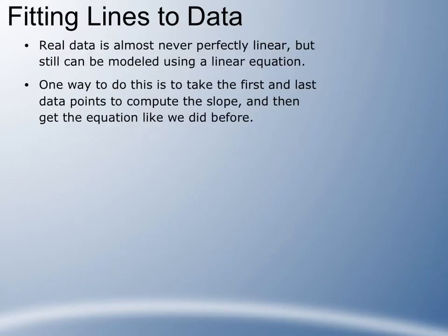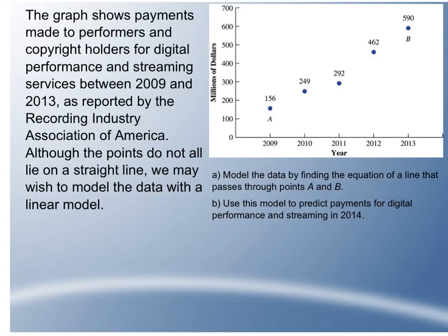The next step in this process is called fitting lines to data, to real data. Real data, typically not perfectly linear, but it can still be modeled using a linear equation. One way we do this is to take the first and the last data points, find the slope, and then get the equation like we did before. Just using two good points to model the data. That's kind of an introductory approach.